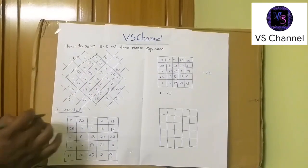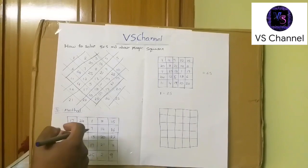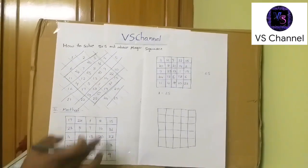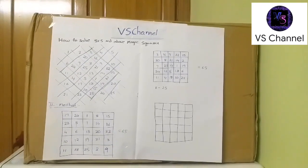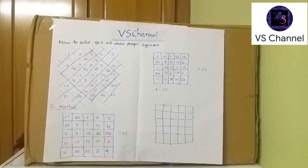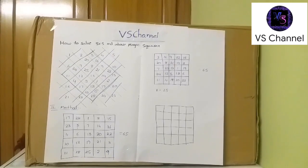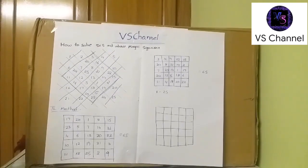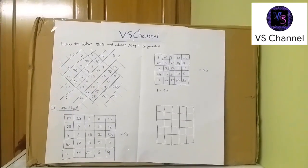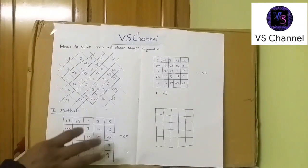And friends verify in any row, any column, any diagonal which satisfies the same, which results justify. And viewers try 7 to 7, and 9 to 9, 11 to 11, 13 to 13, whatever the magic square size, according to the same rules, the first rule and second method.